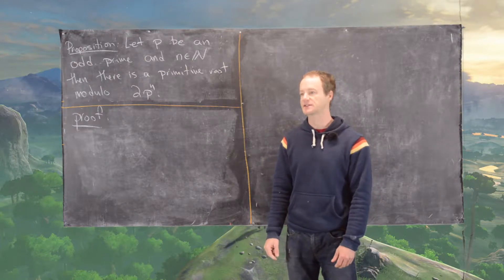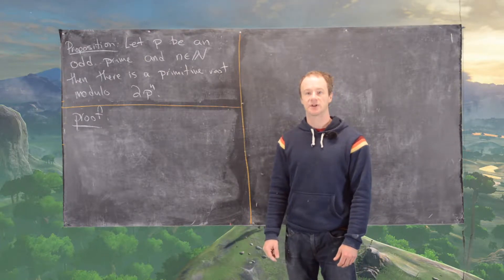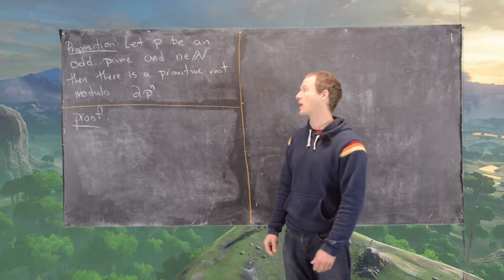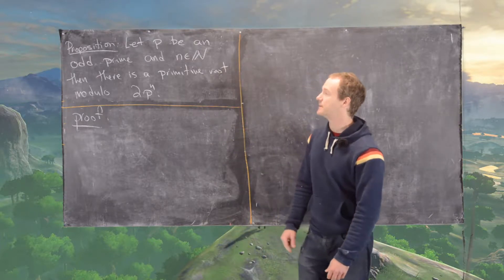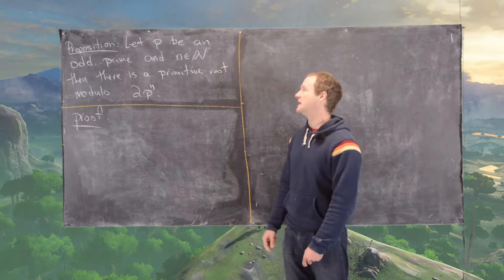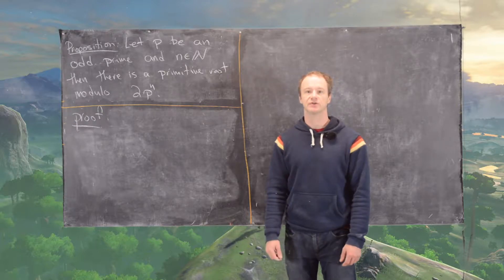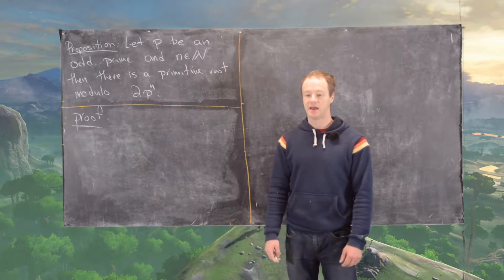So we're almost done classifying when a natural number has a primitive root and when it does not. We have the following proposition. Let p be an odd prime and n be a natural number. Then there is a primitive root modulo 2p^n.